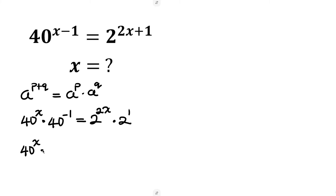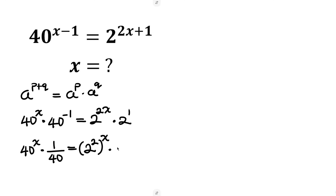Simplifying further, 40 to the power of negative 1 is the same as 1 over 40. On the right side, 2^(2x) can be written as (2^2)^x, since the exponents multiply to give 2x, times 2^1 which is 2.